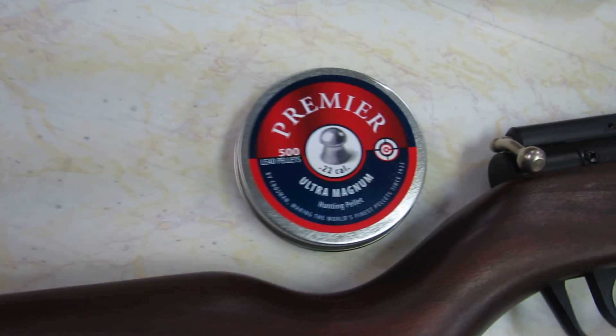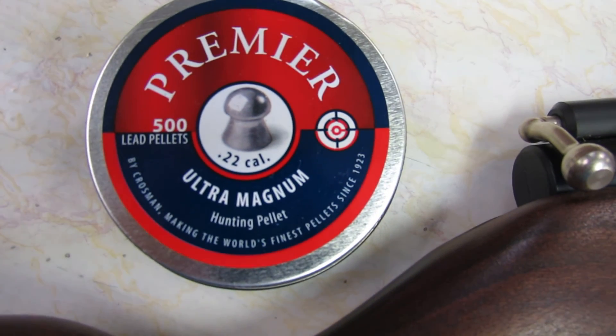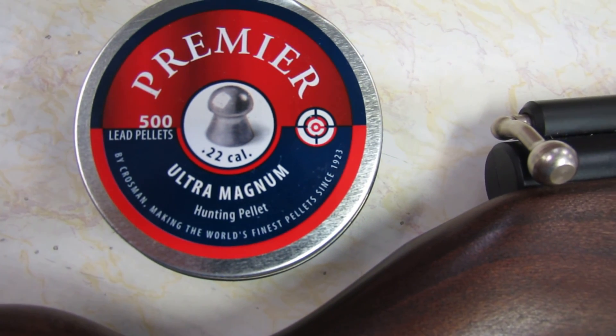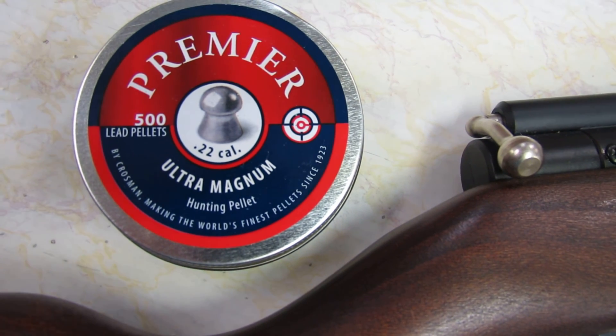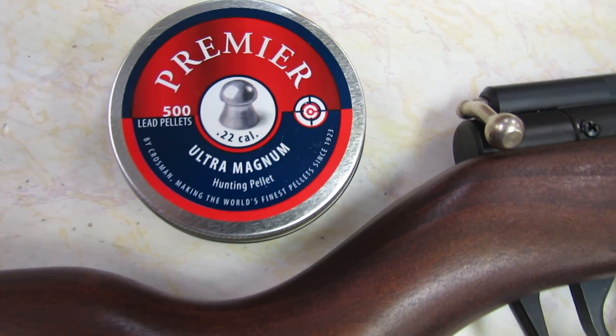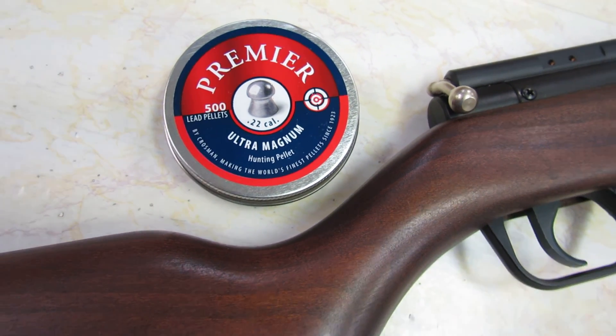Oh, by the way, I used these Crossman Premier Ultra Magnum hunting pellets, which I think are 14.3 grains. Thanks for watching, and I welcome your comments.